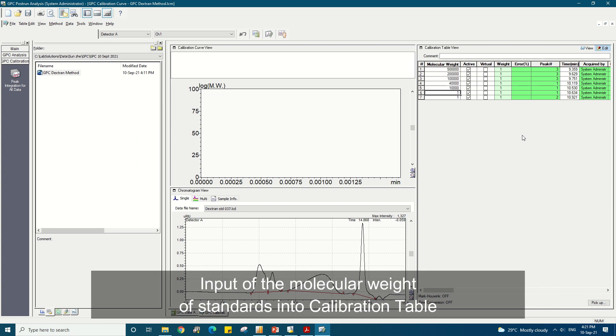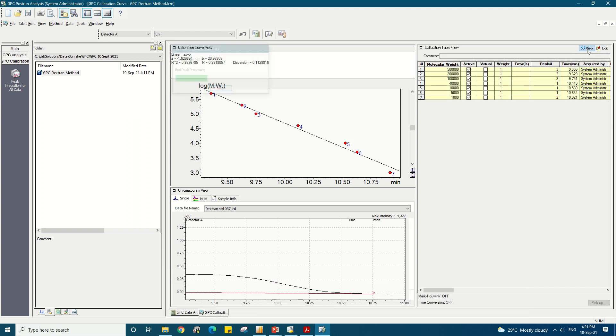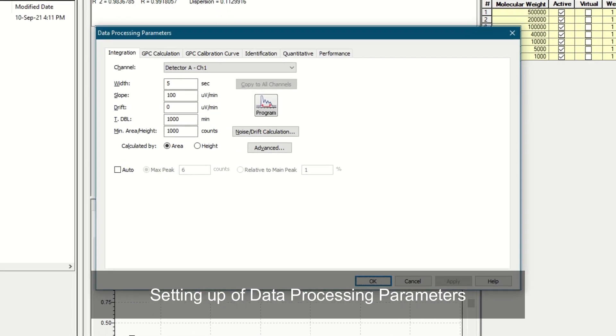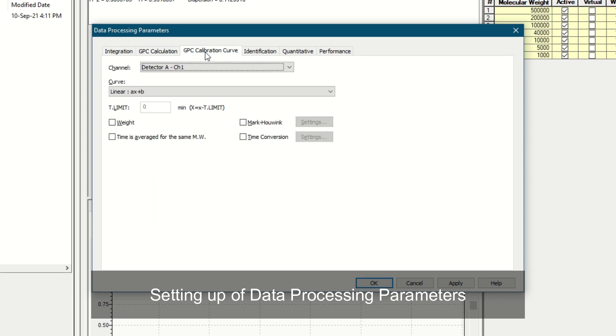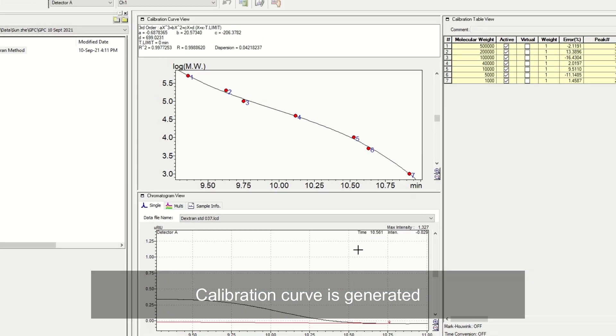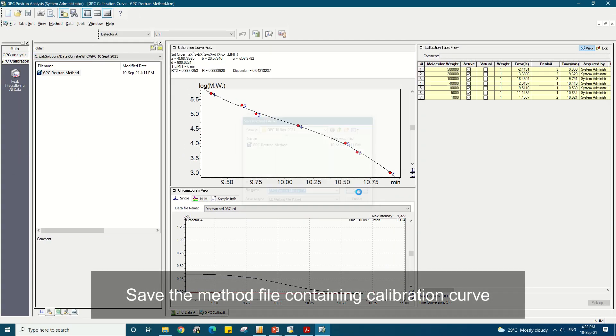The other columns of the table can be left at the default values. Once you're finished editing the calibration table, save the calibration table view parameters and start the setup of the calibration curve. Open the data processing parameters to set the parameters under the integration, GPC calculation, and GPC calibration curve tabs to generate the calibration curve. Lastly, save the method file containing the calibration curve.